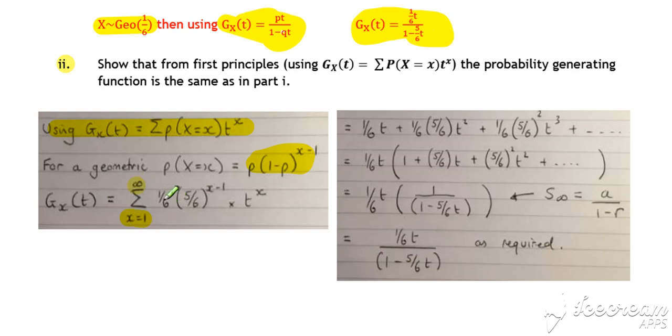So substitute in your probability value in place of probability of x and multiply by t to the x. So this is our probabilities for a Poisson. And then we can expand going up from x is 1 up to infinity.